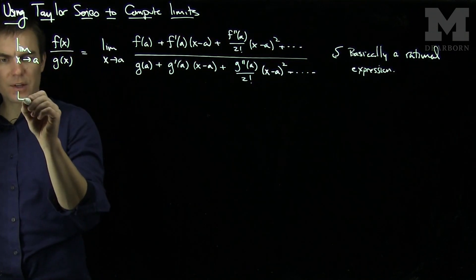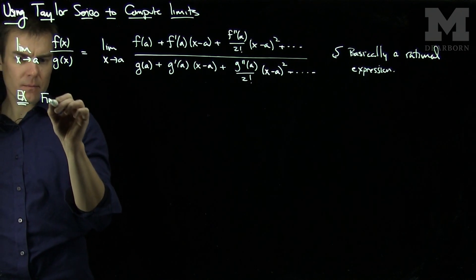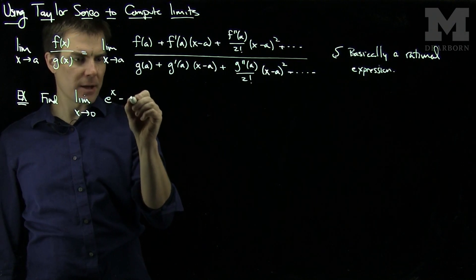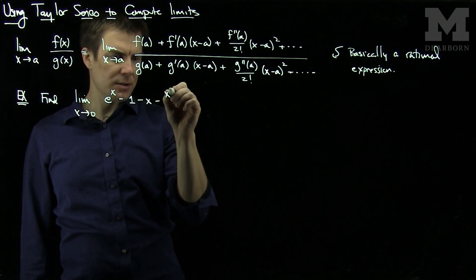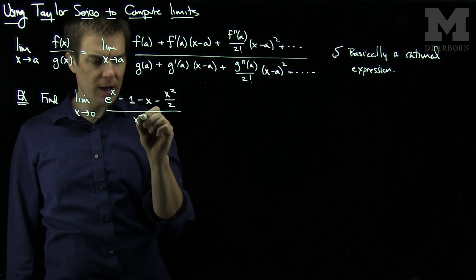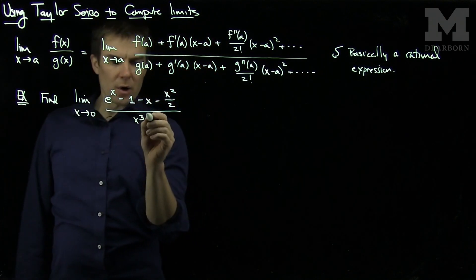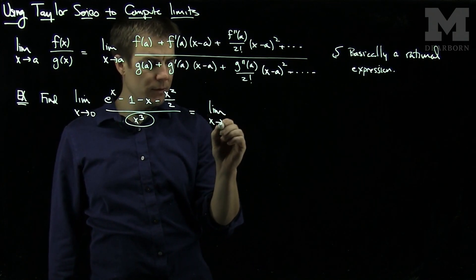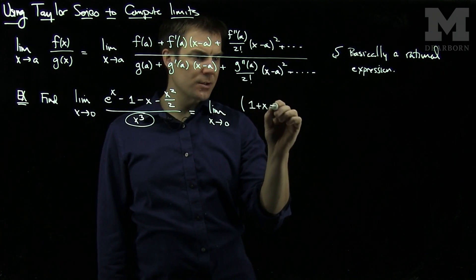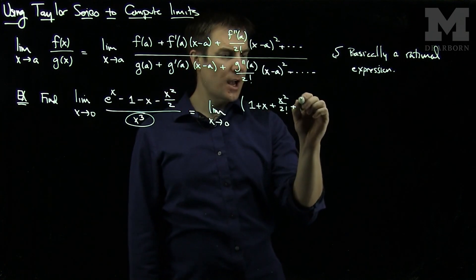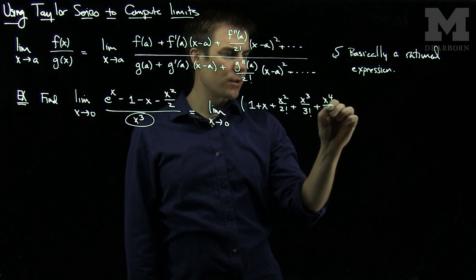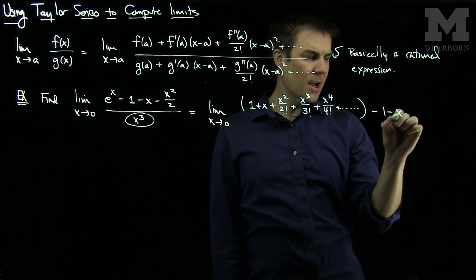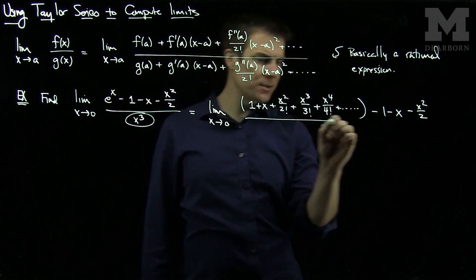Let's see an example. We'll find the limit as x approaches 0 of (e^x − 1 − x − x²/2) all divided by x³. Since x³ is already in its Taylor form centered about 0, we leave the denominator as is. We write down the Taylor expansion for e^x: e^x = 1 + x + x²/2! + x³/3! + x⁴/4! + ... Then we subtract 1 − x − x²/2 from that in the numerator, and divide everything by x³.